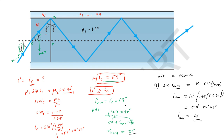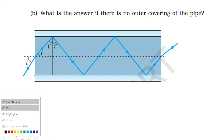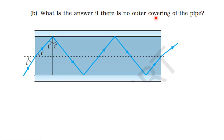So the angle of incidence in the air medium has a maximum value of 60 degrees. Since i' is greater than the critical angle for all rays entering within this range, the answer for Part 1 is that the range of angles of incidence is 0 to 60 degrees.